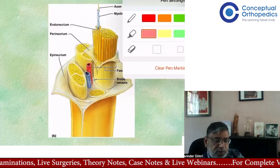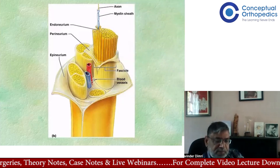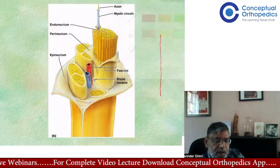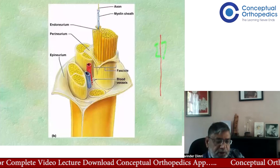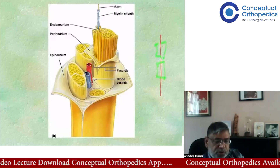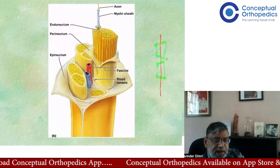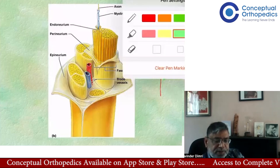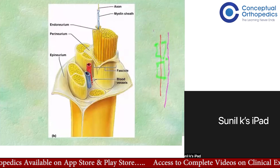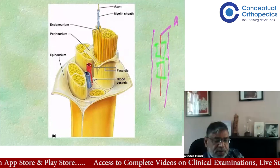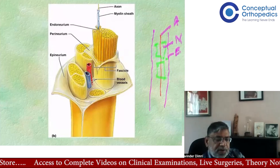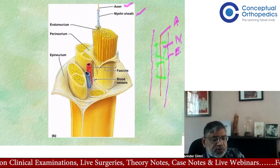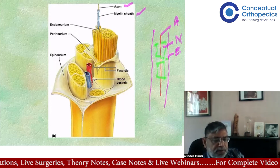So you have an axon surrounded by myelination, and within that myelination there are small gaps called nodes of Ranvier. Outside this myelination, each axon is then surrounded by a connective tissue called endoneurium. So from inside out: axon, then myelin, then endoneurium.